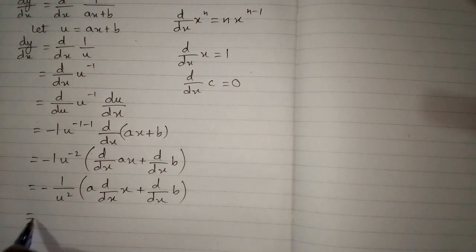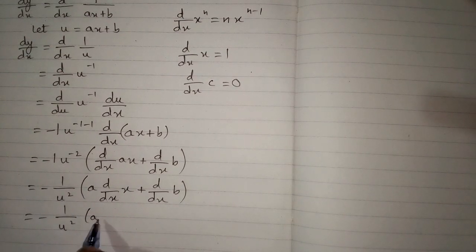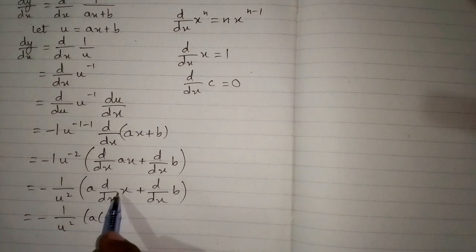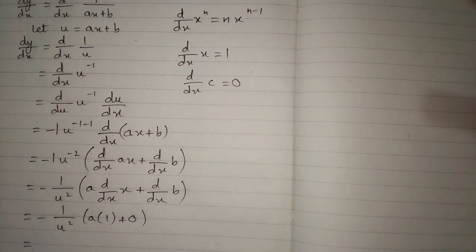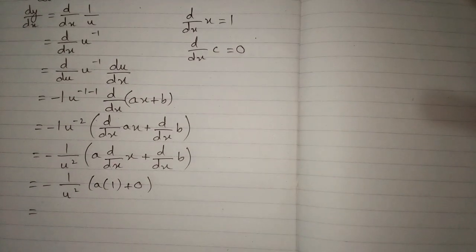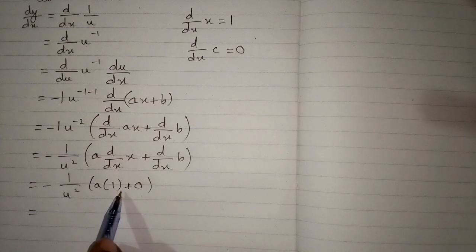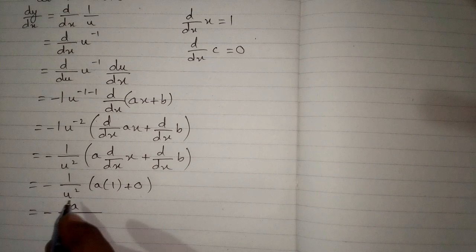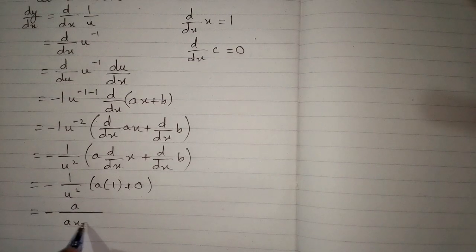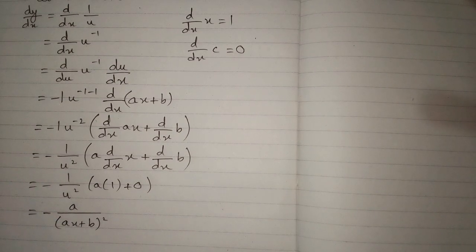Applying these results, we have minus 1 upon u squared times (a times 1 + 0). So a times 1 is a, and a times minus 1 is minus a upon u squared. Substituting back u = ax + b, the final answer is minus a upon (ax + b) squared.